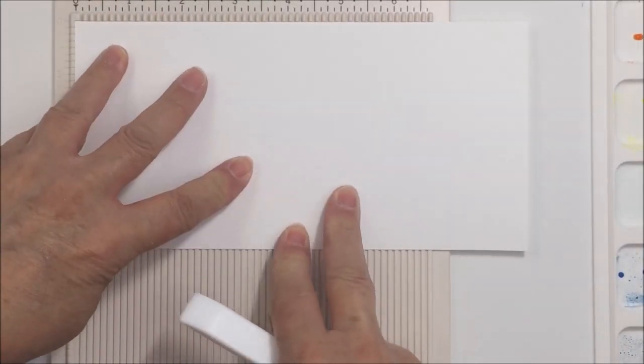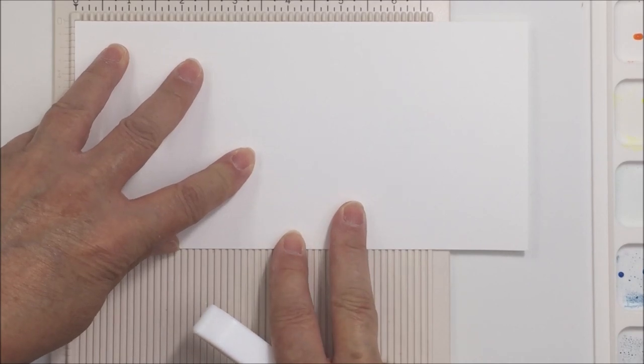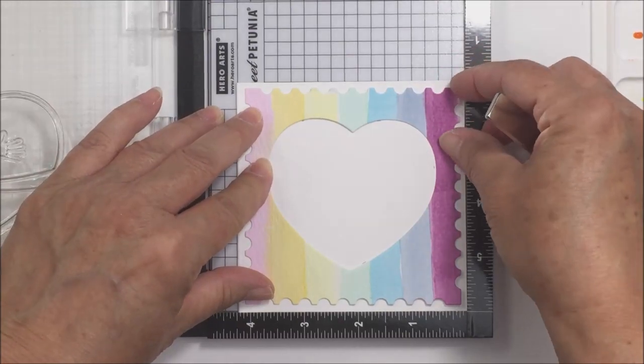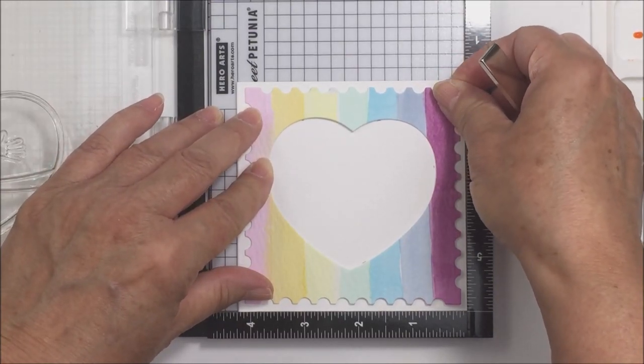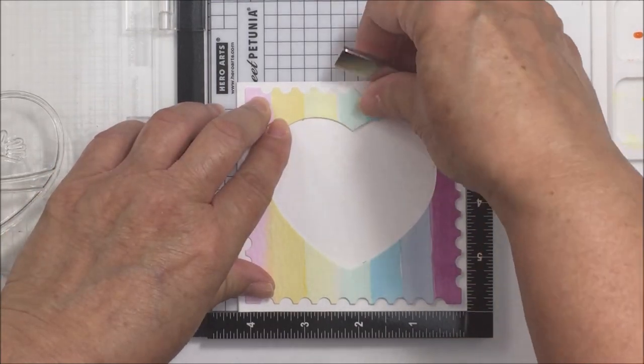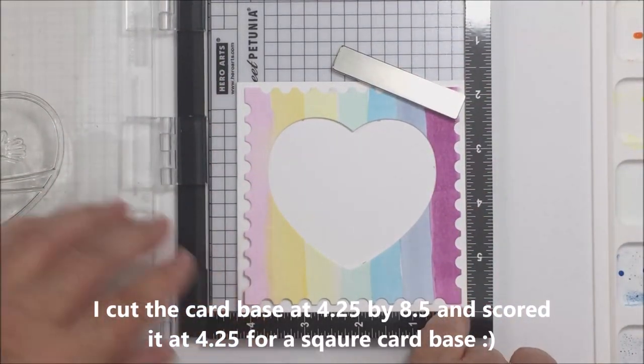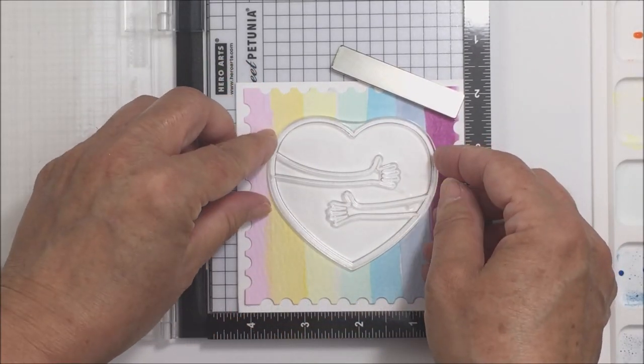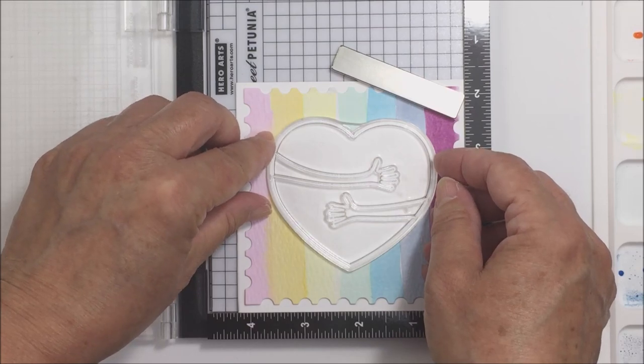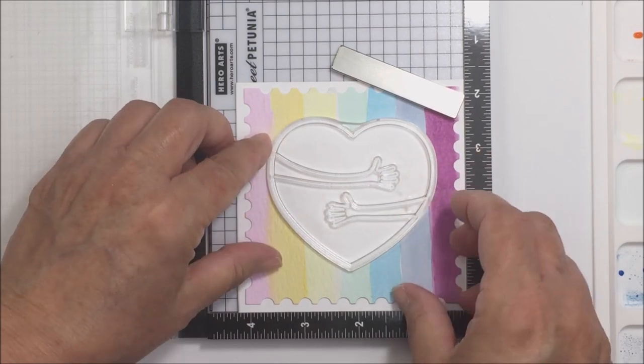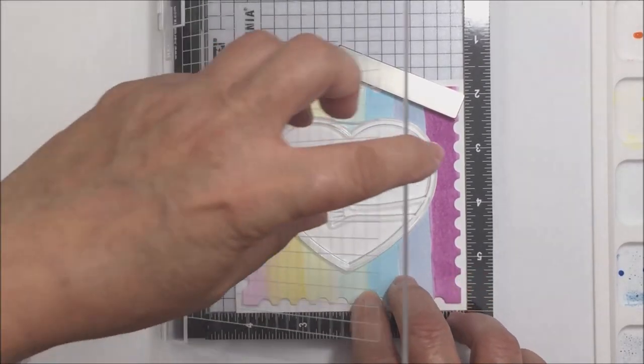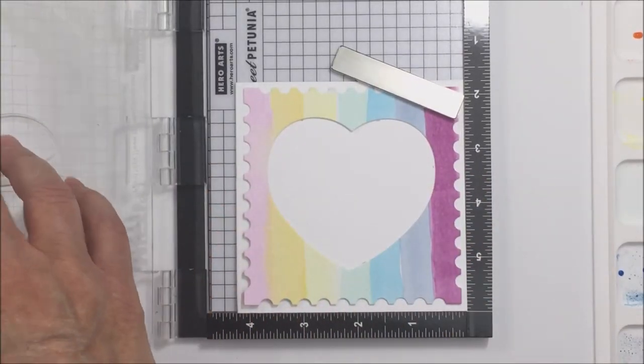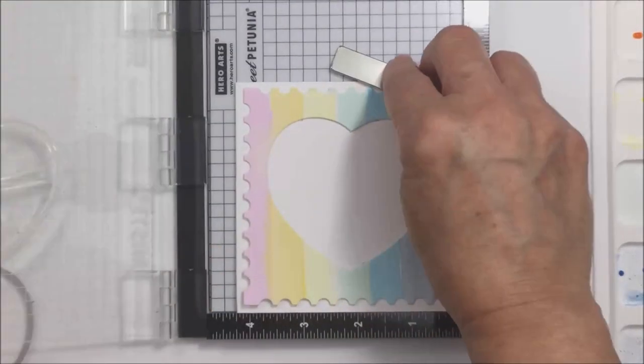I have cut that out of my watercolor paper and I've also created a card base. Now my card base is out of some 110 pound Neenah Solar White cardstock. It is cut to four and a quarter by four and a quarter and I am going to just put that into my MISTI, place the watercolor paper onto the card base, and place that Paper Hugs heart stamp in the area where I've die cut out the heart shape.